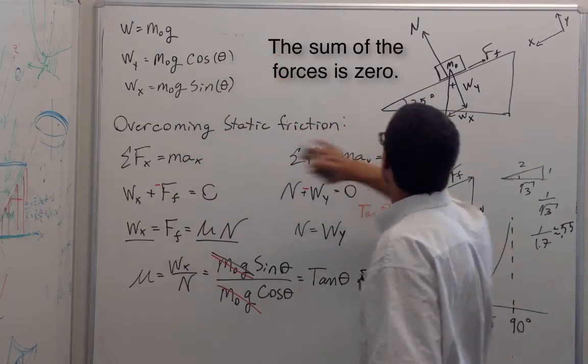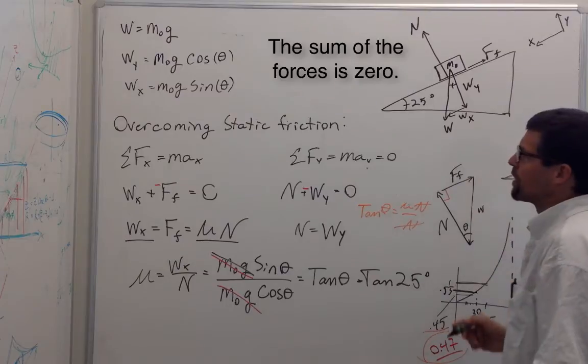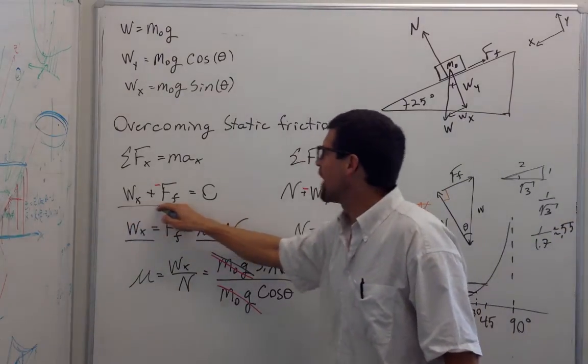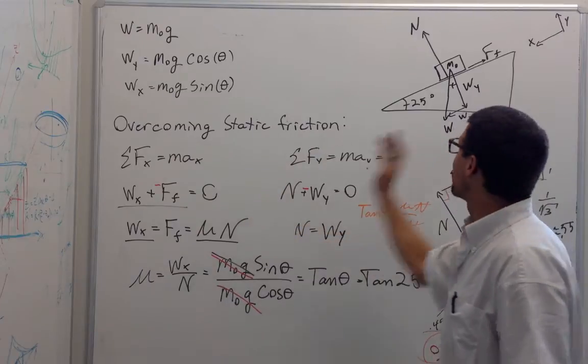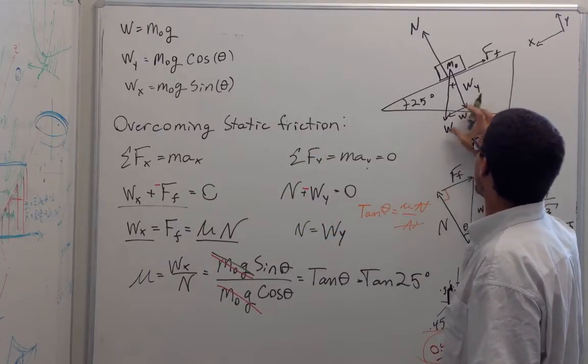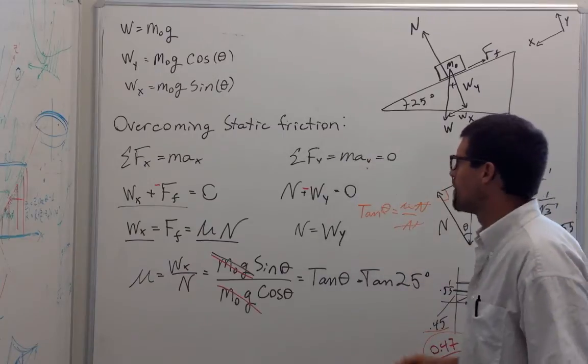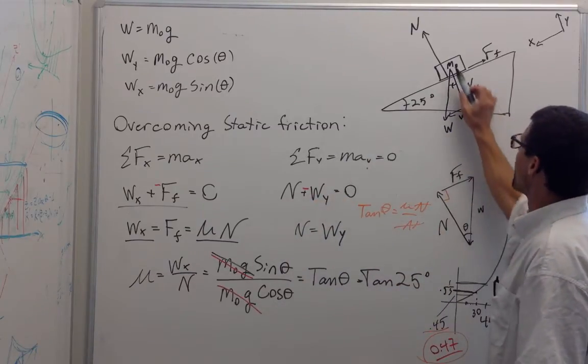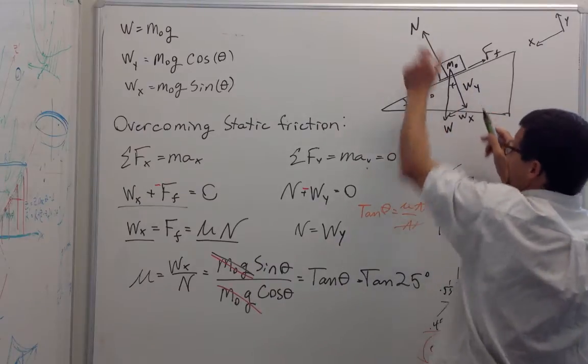I've separated my weight into the x and y components, and then I can substitute them in, where in the x-direction I have friction plus weight in the x-direction. This is this component of the weight, which is pushing it down the ramp, and then I have, in the y-direction, this component of weight, which is being compensated by the normal force.